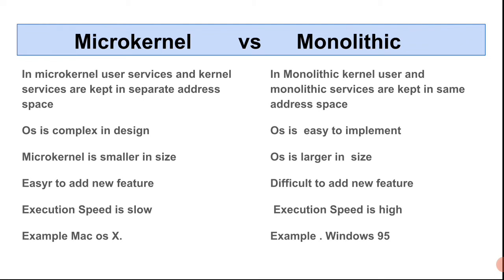With microkernel, it is easy to add a new feature — due to separate address spaces, you can add a new feature without disturbing the whole operating system. In the case of monolithic kernel, it is difficult to add a new feature because the address space is the same, so the whole operating system is disturbed, making it hard to update or add new features.